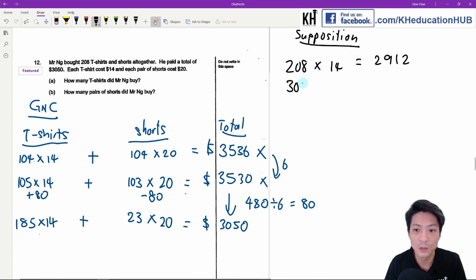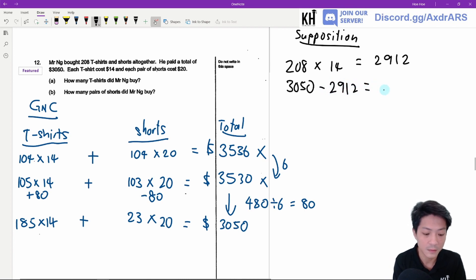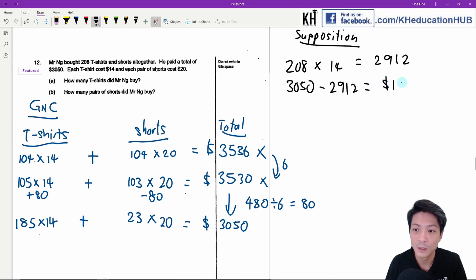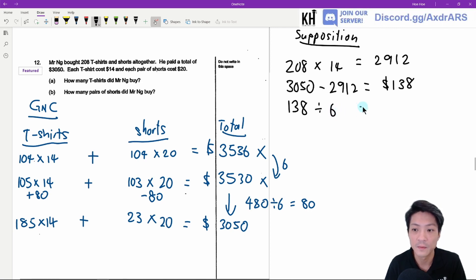208 times 14. The next step you will need to do is you need to find the difference between the actual amount and this supposed amount. 138. The next step will be using 138 divided by the difference between the shorts and the t-shirt, which is 6. So 138 divided by 6 will give you